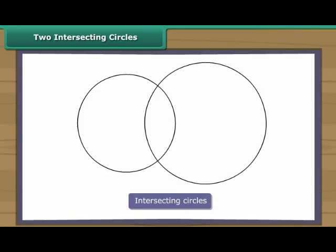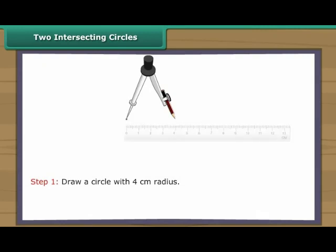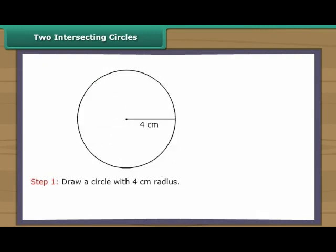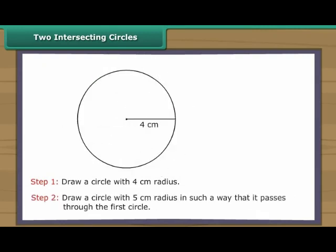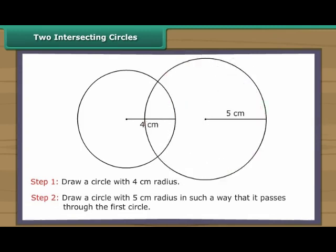Two intersecting circles. Intersecting circles may or may not have the same radius. Let us now draw intersecting circles. Draw a circle with four centimetres radius. Draw a circle with five centimetres radius in such a way that it passes through the first circle. We have two intersecting circles.